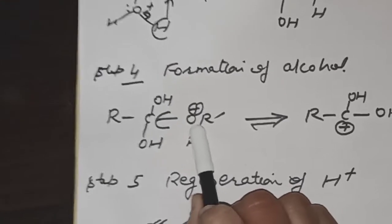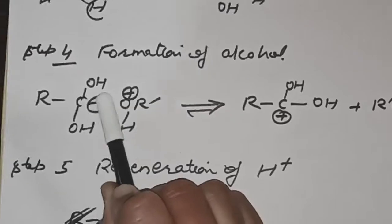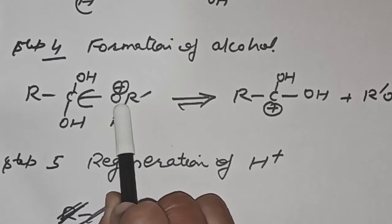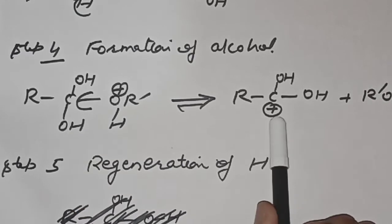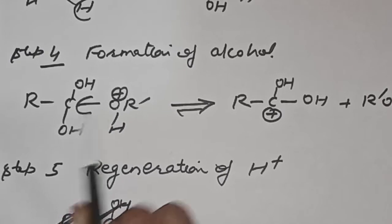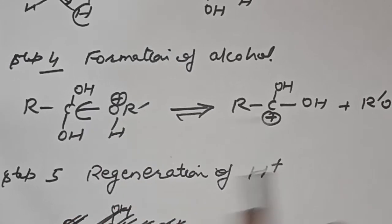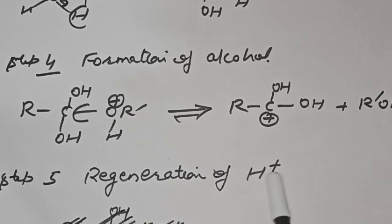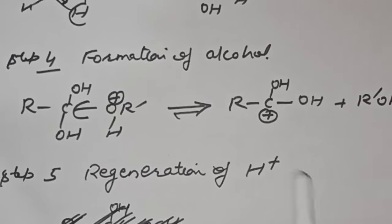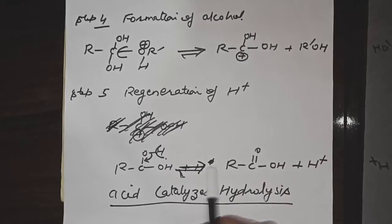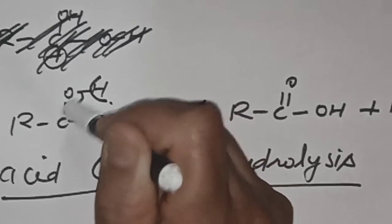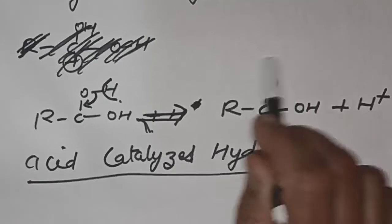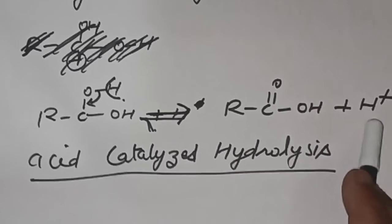Step 4 is the formation of alcohol. When the alkoxy oxygen has a positive charge, it balances it by taking a pair of electrons. This pair shifts toward the oxygen, cancelling its positive charge, but the carbon then acquires a positive charge since the pair was a shared pair. Finally, there is regeneration of H+ — the hydrogen leaves as H+ and the pair shifts between carbon and oxygen, giving us the carboxylic acid product and regenerating the acid catalyst.